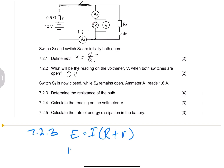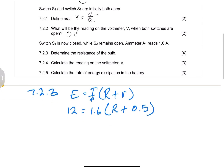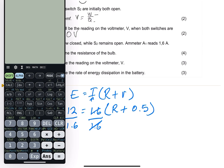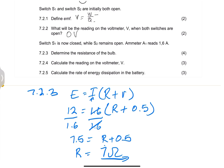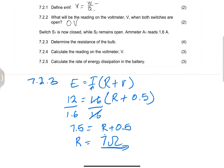So: 12 = 1.6 × (R + 0.5). Dividing 12 by 1.6 gives us 7.5. So R + 0.5 = 7.5, and to get the value of R, I subtract 0.5, which gives us 7 ohms. That's the value of the resistance of the bulb — it's the only resistor in the external circuit.